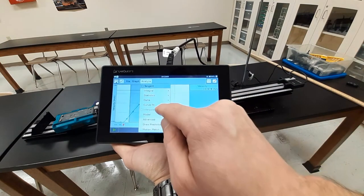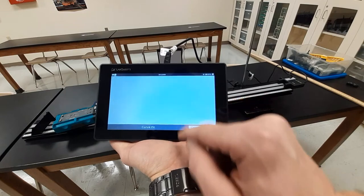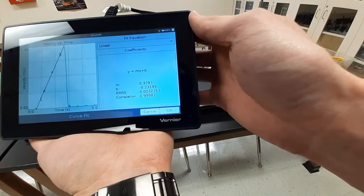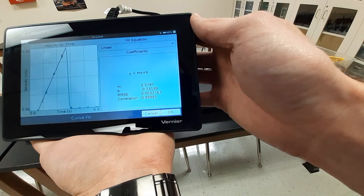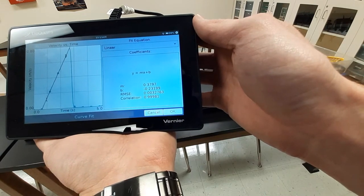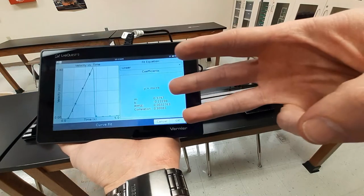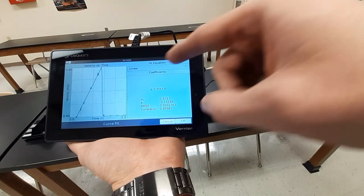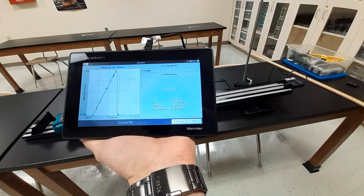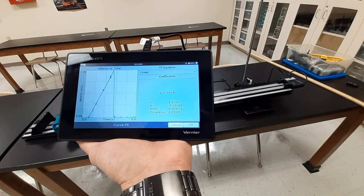So one more time here for a height of five centimeters. Highlight, analyze, curve fit, velocity. This time slope 0.3797. So you got three trials for five centimeters. Take the average of those. I'm going to stop here and I'm going to change our height.